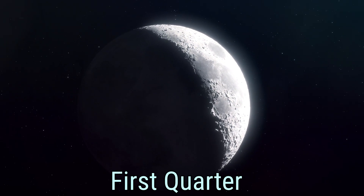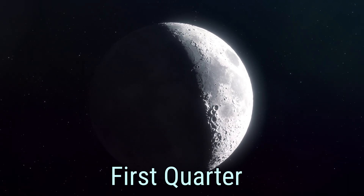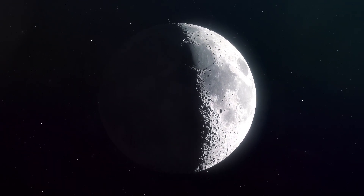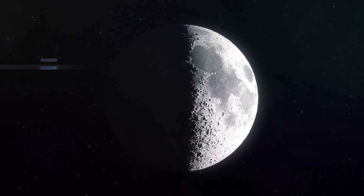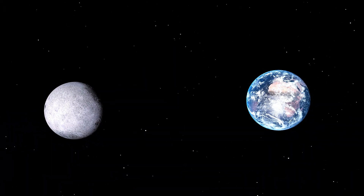At the first quarter, the Moon forms a 90-degree angle with Earth and the Sun, displaying half of its illuminated surface. This phase lasts about a day.